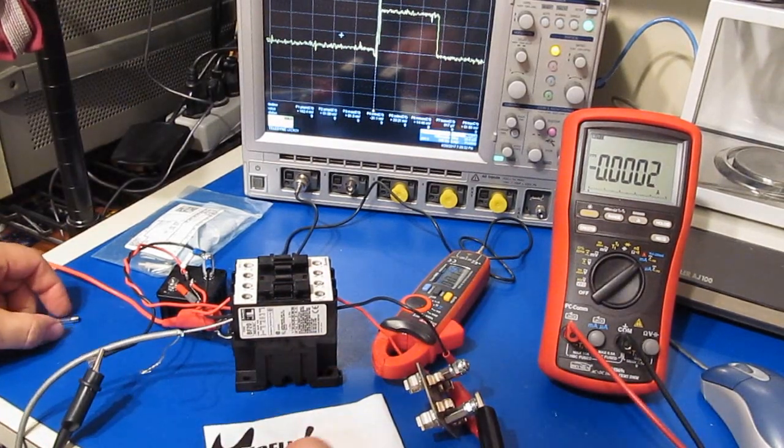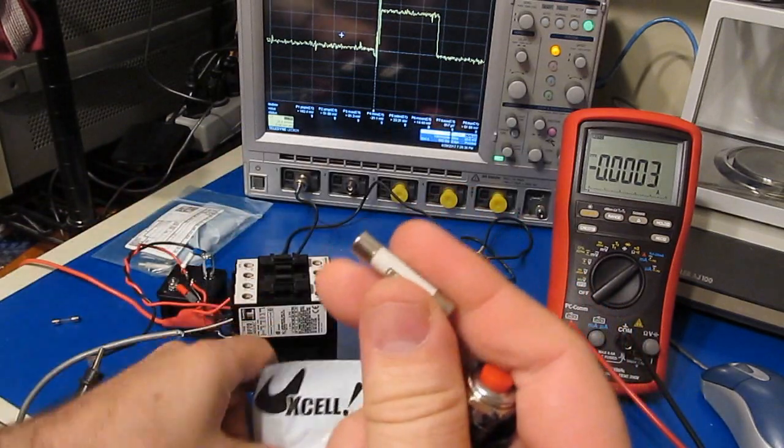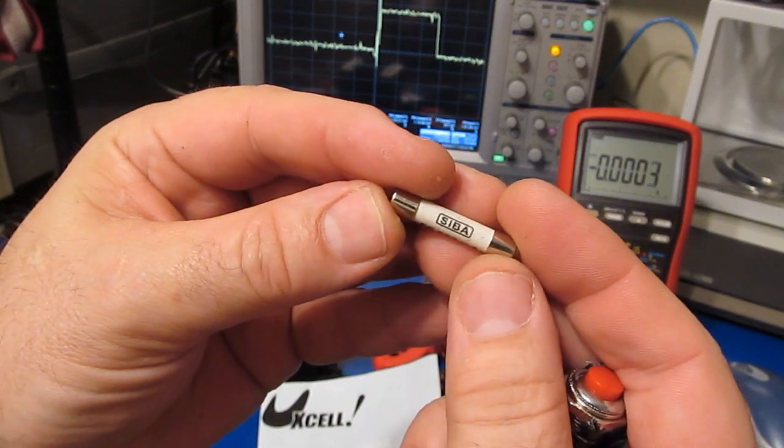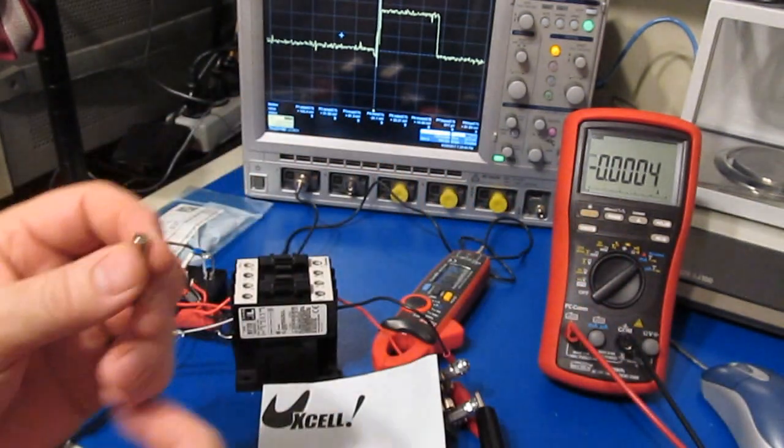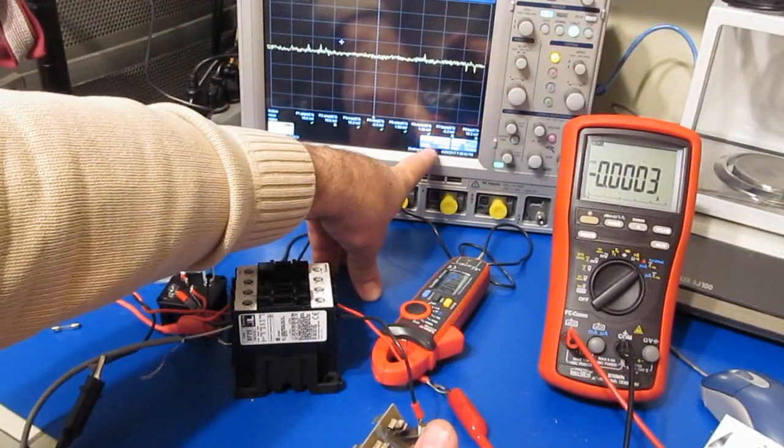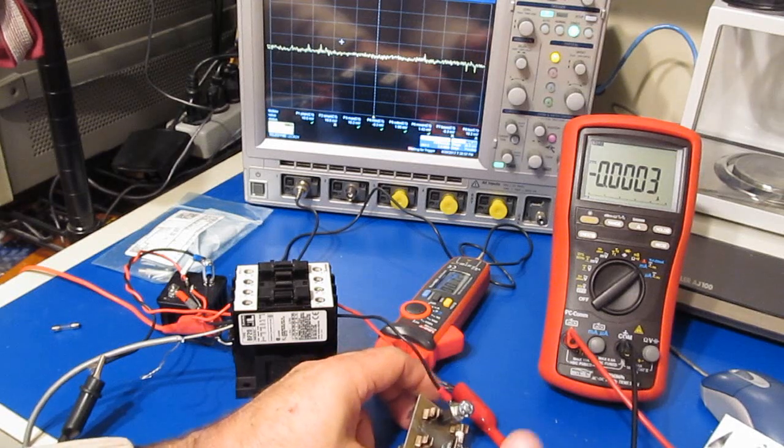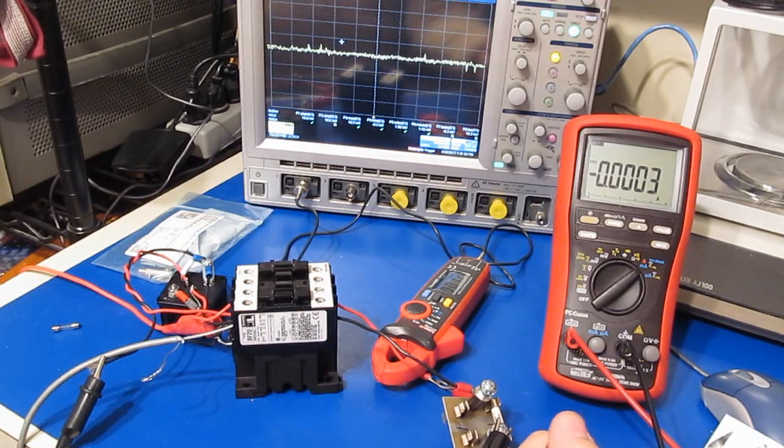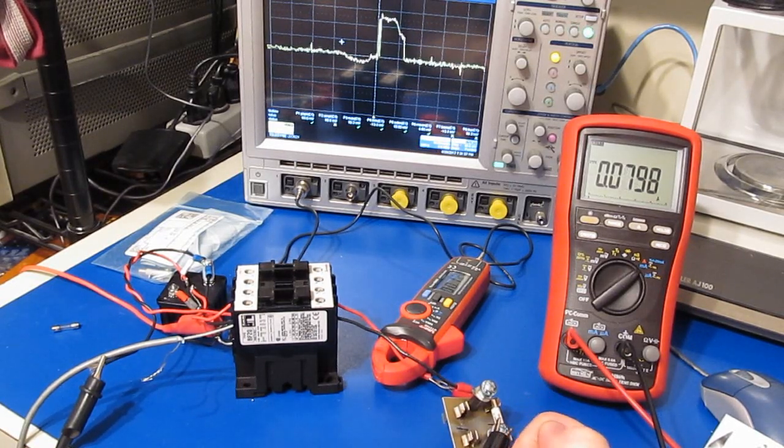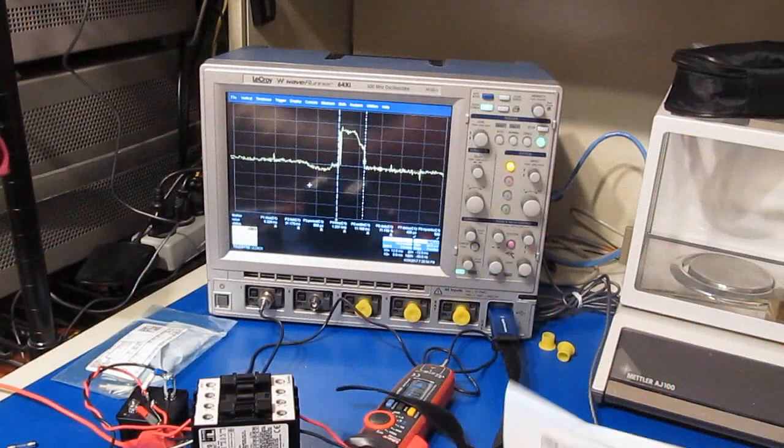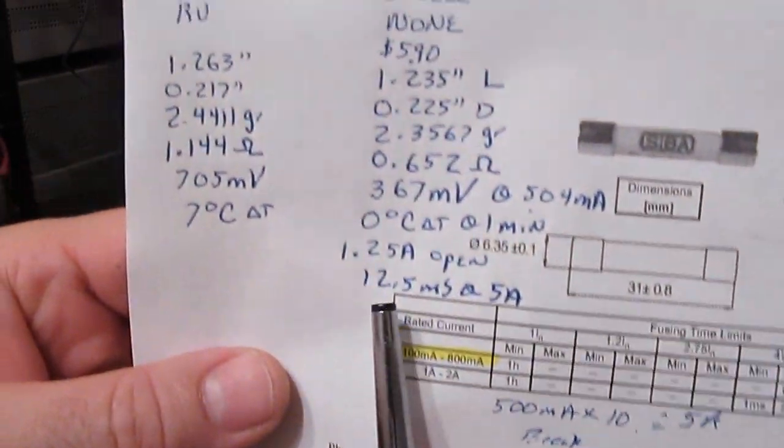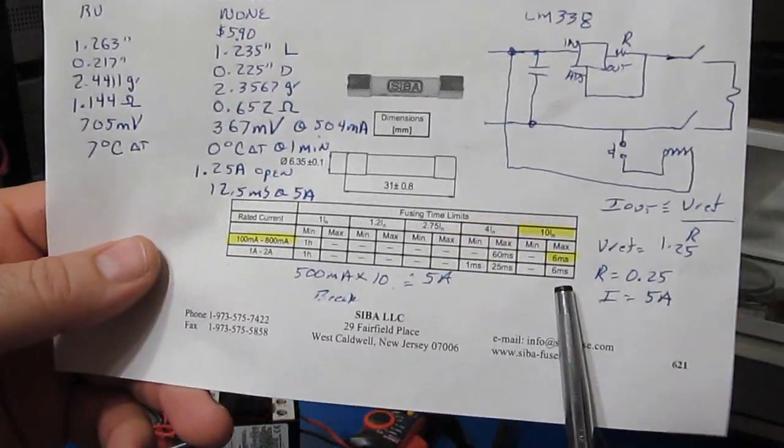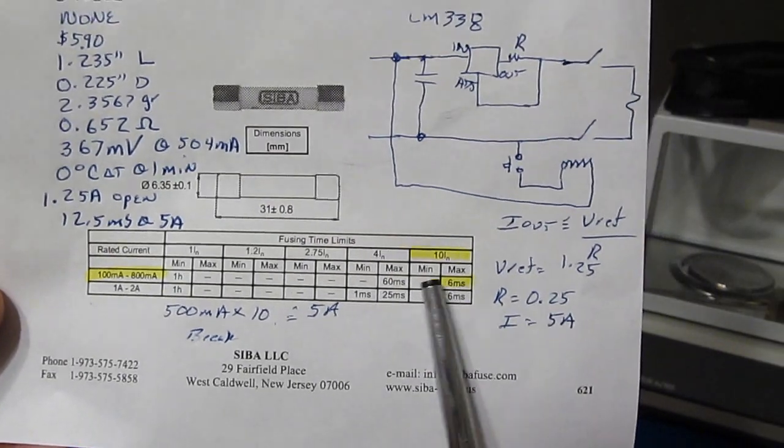What we'll do next is install this last fuse here and let's just see what happens. Again, this fuse should open up in under 6 milliseconds. And just for a reference, it looks identical to the first fuse that we looked at. What I've done is I've changed our scope to 10 milliseconds per division. Hopefully we'll be able to actually catch it with it set to single shot. And here you go, three, two, one. Wow, look at this. So our break time is roughly 12 and a half milliseconds at 5 amps. And this is about double what the Siba manufacturer calls for.